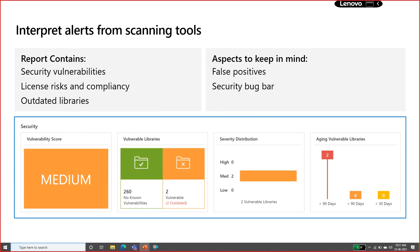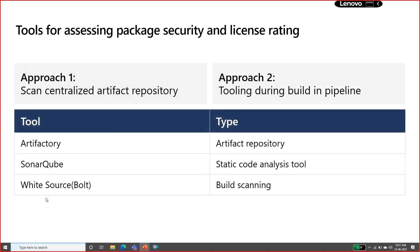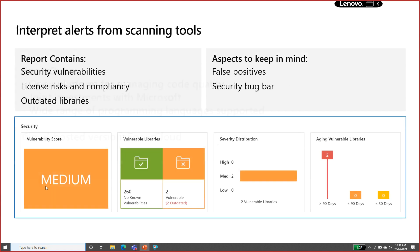This screenshot is from WhiteSource Bolt, which shows what kind of vulnerabilities you have. When you do a scan, the tool gives you a report showing medium risk, high risk, and all those risks are defined. Based on that you can analyze the risk and how to fix it - the tools also suggest how to fix issues. You can look at security vulnerabilities, license risk and compliance, outdated libraries, and then fix those issues.